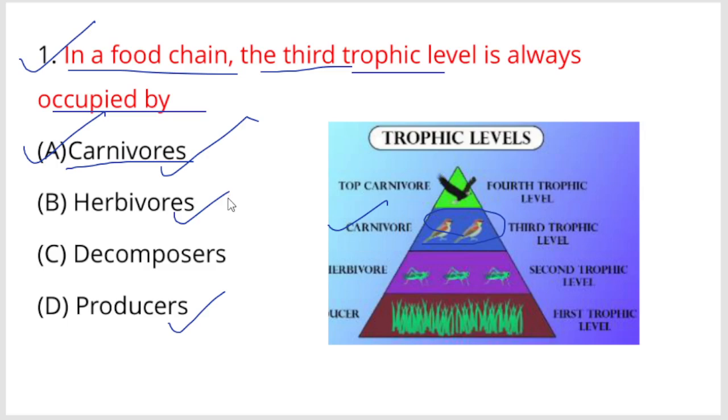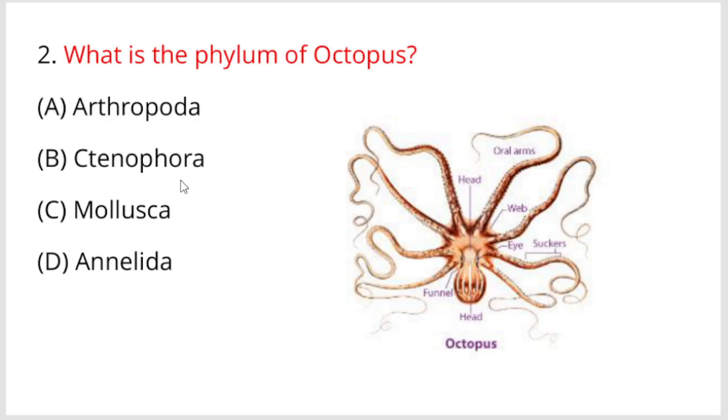Next, question number two: What is the phylum of octopus? The options are Arthropoda, Ctenophora, Mollusca, Annelida. Option C, Mollusca, is the right answer.